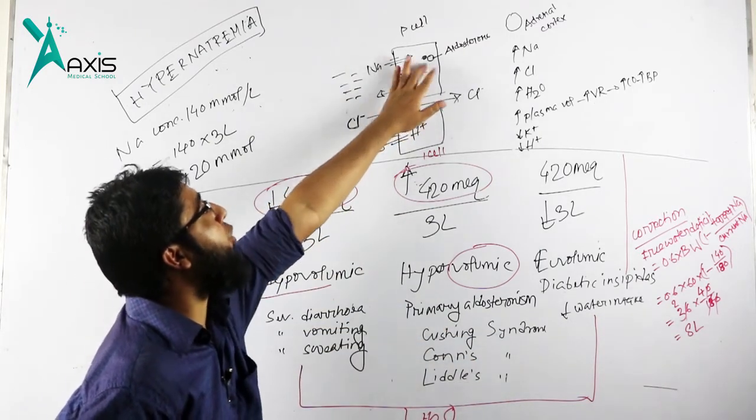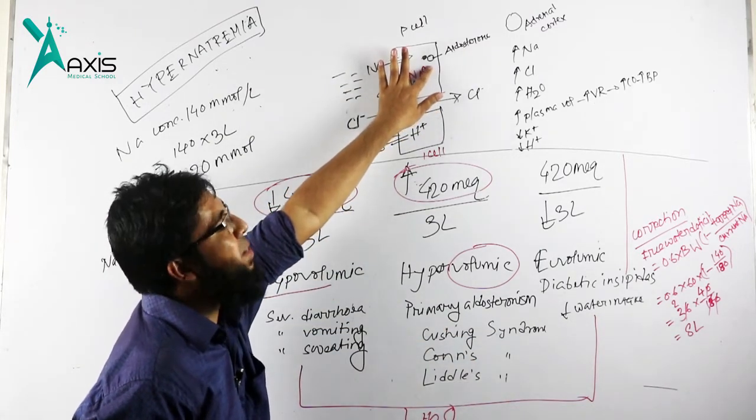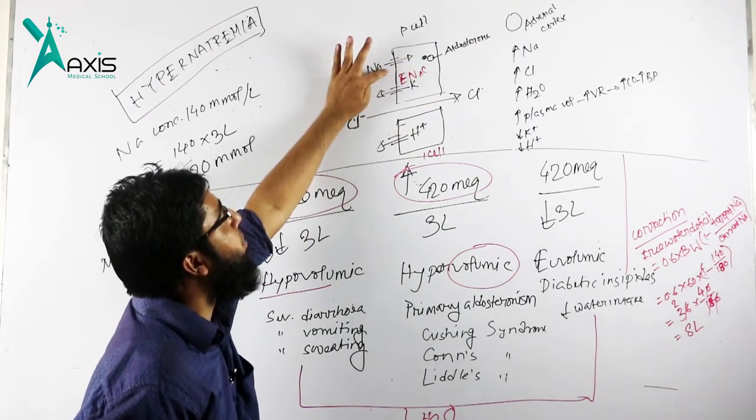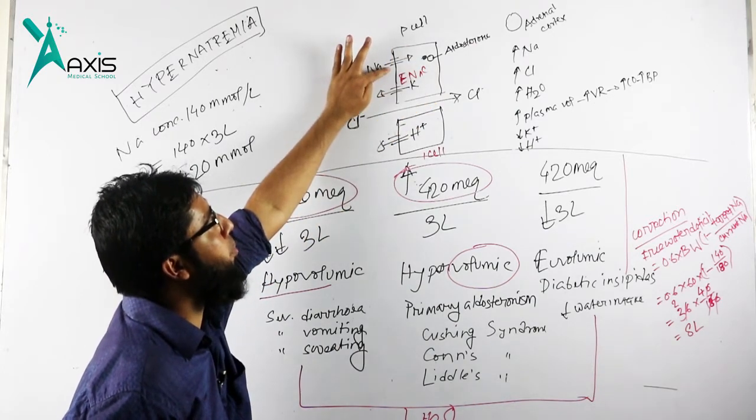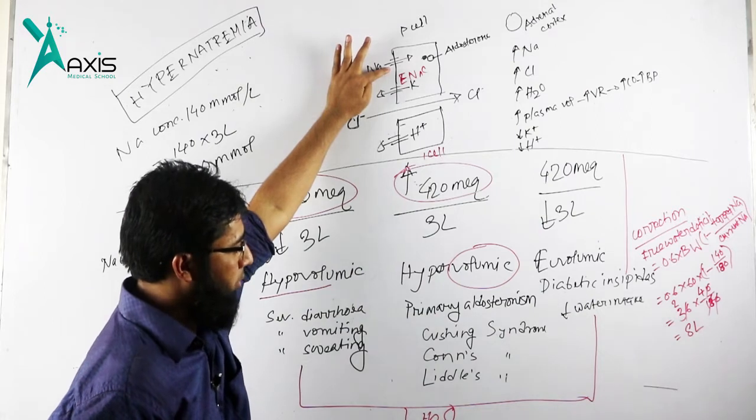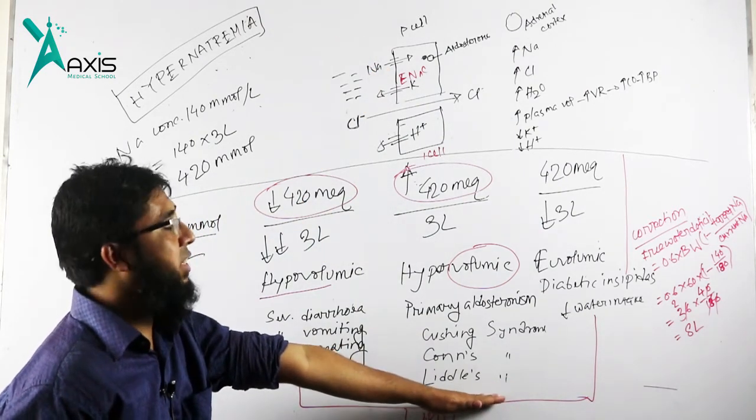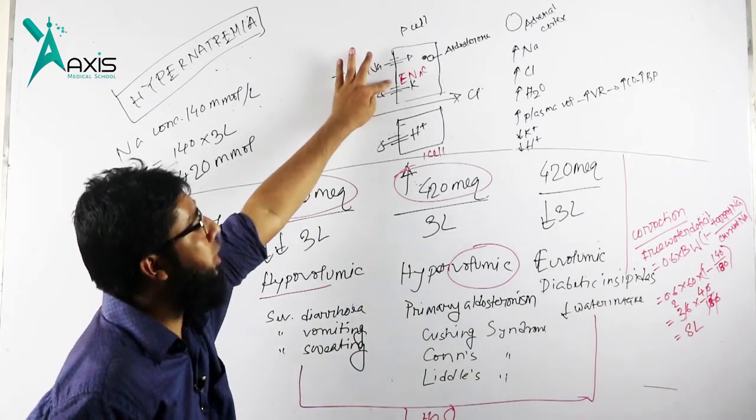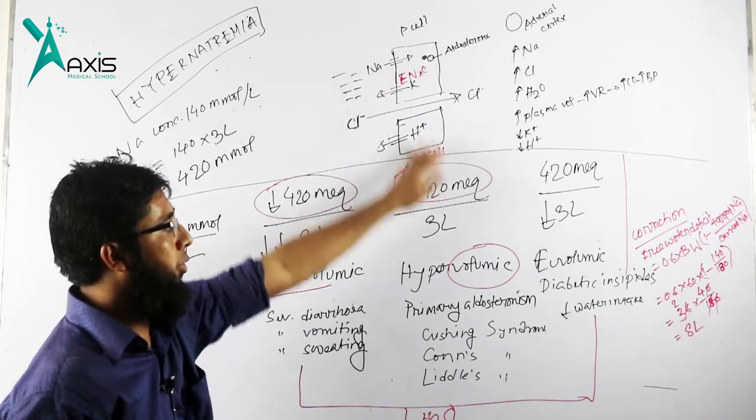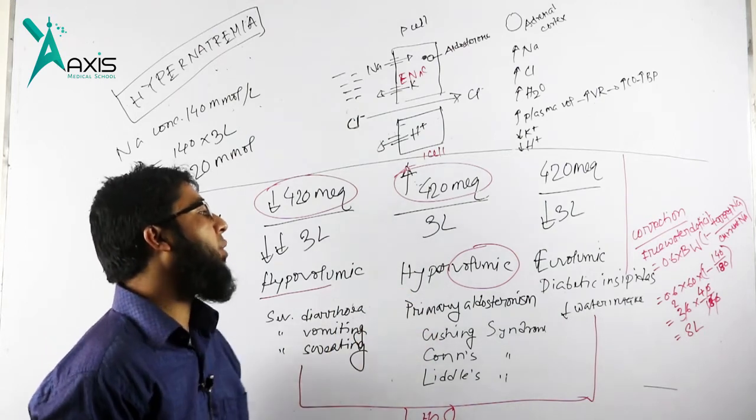For Conn syndrome, we need aldosterone receptor blocker like eplerenone, or epithelial sodium channel blocker like spironolactone. Liddle syndrome is a genetic disorder where we use epithelial sodium channel inhibitor. So this is the treatment of hypervolemic hypernatremia.